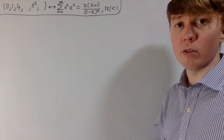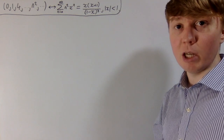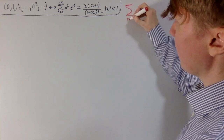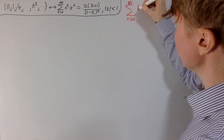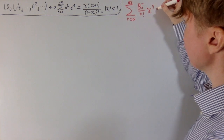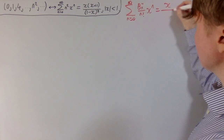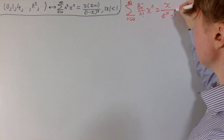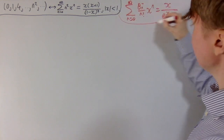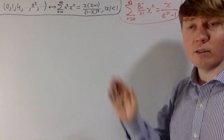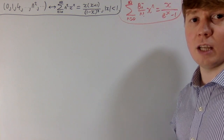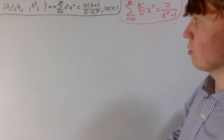While this isn't perhaps very impressive for the square numbers, for more complicated sequences this sort of approach can be really useful. For example, the Bernoulli numbers are really useful in analysis but quite difficult to define explicitly. However, you can define them in terms of a generating function: the sum from n=0 to infinity of Bₙ/n! · xⁿ equals x/(eˣ - 1). You can also generate them using the Taylor series of tan. We'll look at a couple more examples of nice generating functions.